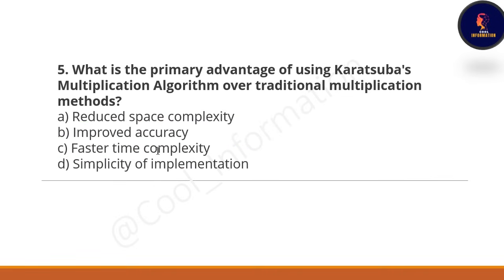Next question: what is the primary advantage of using the Karatsuba multiplication algorithm over traditional multiplication methods? Option A is reduced space complexity, Option B is improved accuracy, Option C is faster time complexity, and Option D is simplicity of implementation. Option C is correct — we use the Karatsuba multiplication algorithm because its time complexity is faster than the traditional multiplication method.